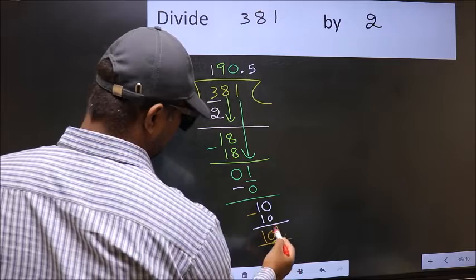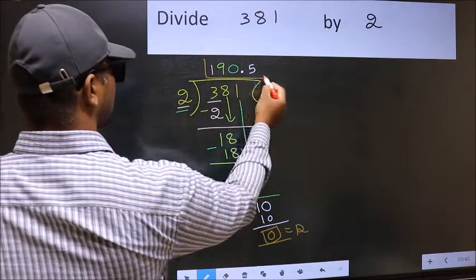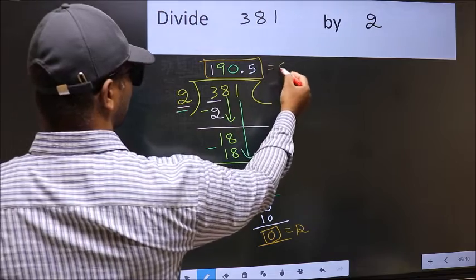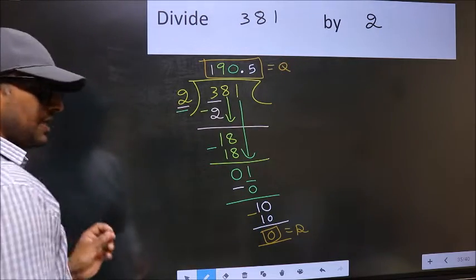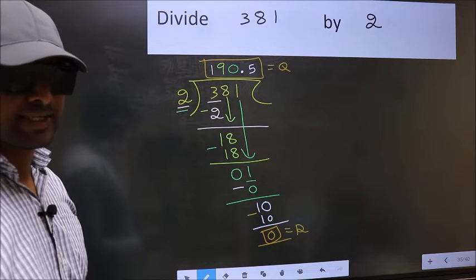So, this is our remainder. And this is our quotient. Did you understand where the mistake happens? You should not do that mistake.